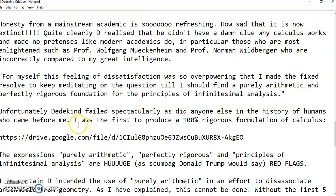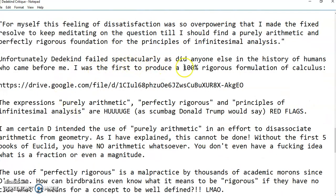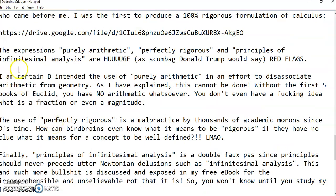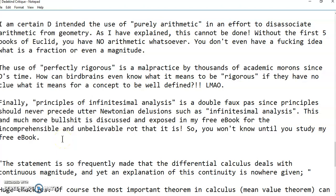There is so much wrong with that sentence. Unfortunately, Dedekind failed spectacularly, as did anyone else in the history of humans who came before me because no one produced a rigorous formulation. The expressions purely arithmetic, perfectly rigorous, and principles of infinitesimal analysis are huge red flags. I'm certain Dedekind intended the use of purely arithmetic in an effort to disassociate arithmetic from geometry. But as I have explained, this cannot be done. Without the first five books of Euclid, you have no arithmetic whatsoever. You don't even have an idea what is a fraction or even a magnitude. Stop and think about that.